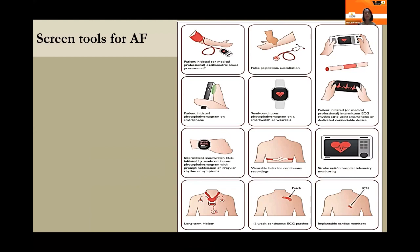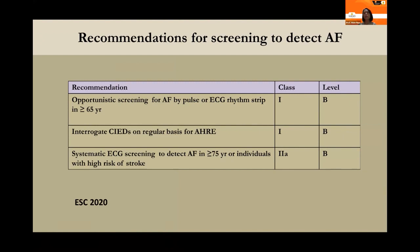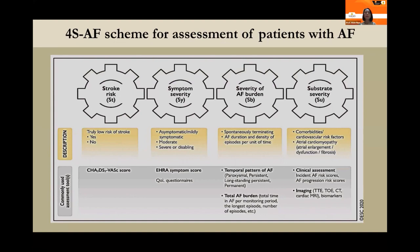The ESC 2020 guideline emphasizes AF screening using novel tools such as smartphones, wearable watches, and handheld devices. Class 1 recommendations include pulse palpation or ECG recording in patients aged 65 and above, and detection of atrial high-rate episodes via CIED interrogation. Class 2a recommendations include systematic ECG screening for patients aged 75 or older, or those at high risk of AF.